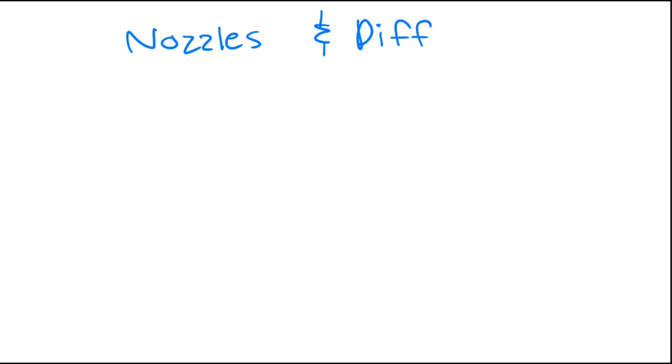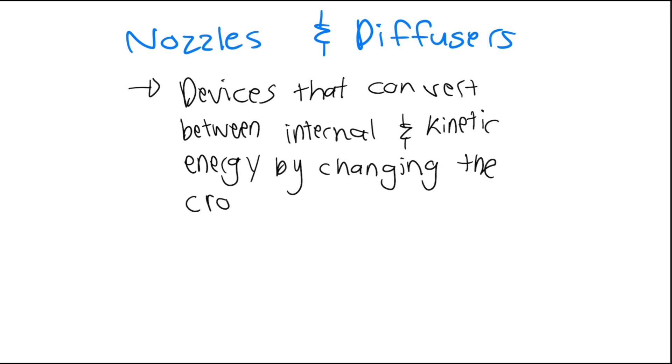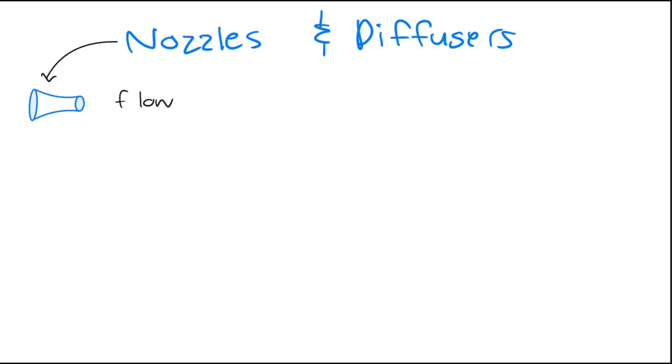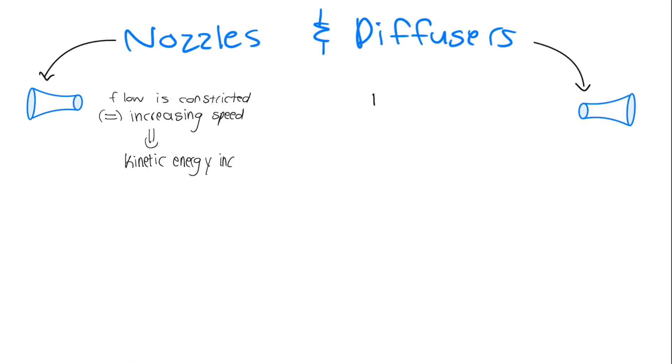First let's talk about nozzles and diffusers. These process devices convert between internal and kinetic energy by changing the cross-sectional area through which a fluid flows. In nozzles, flow is constricted by decreasing the cross-sectional area through which the fluid flows, thus increasing the speed and with it the kinetic energy. Diffusers increase the cross-sectional area to decrease the flow velocity.